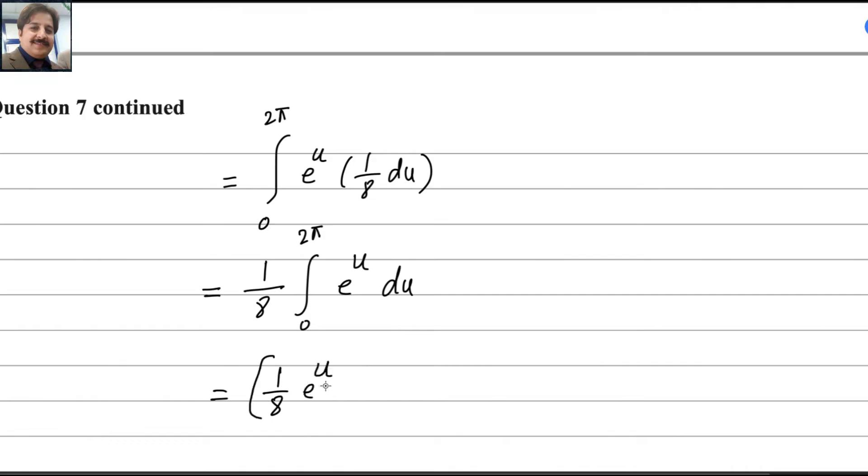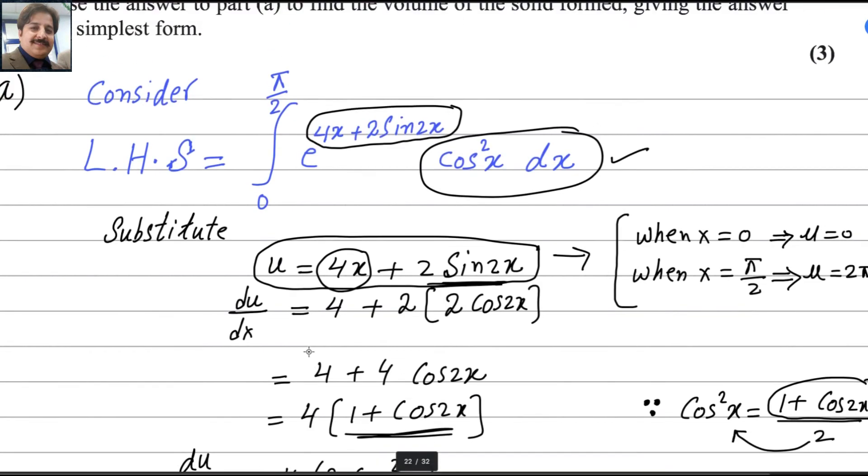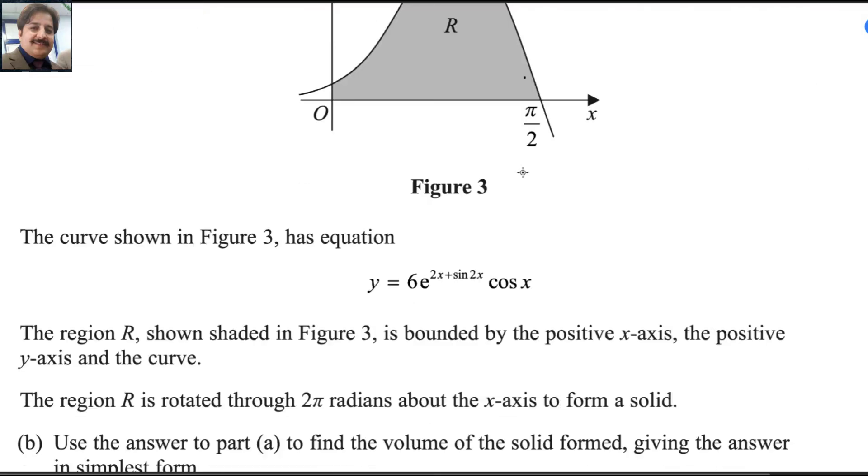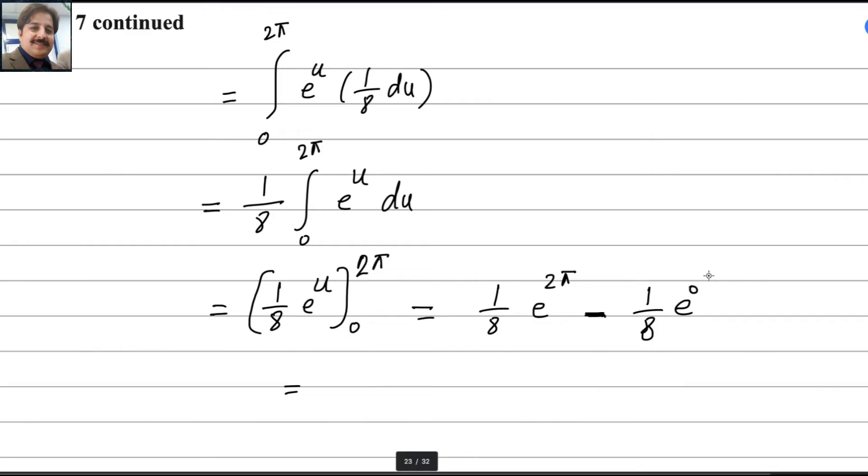Then you apply the limit from 0 to 2π. Apply the upper value, so it will be 1/8 e to the power 2π, then minus 1/8 e to the power 0. This minus is from the formula. Better you keep 1/8 as given in the question. 1/8 is outside of the bracket, so you can take it common. The answer of e to the power 0 is 1. We got the answer: 1/8 (e to the power 2π minus 1), and this equals the right hand side. So first part is done.